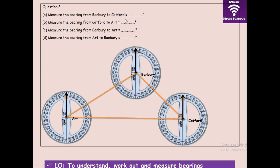Here is another question: measure the bearing from Bunbury to Cardford. Please pause and do all four questions, write your answers down, and compare. Time to reveal — the first answer is 130 degrees, the second is 270 degrees, the third is 238 degrees, and finally 059 degrees. Remember, this must be in three figures — 059, not just 59. I deliberately left out the zero to emphasize this important point.